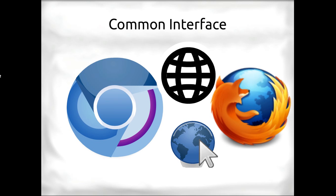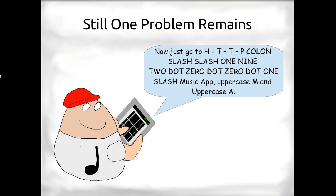Now we've got our instrument at a web page with a URL. We set up a Wi-Fi network and a web server and tell users to just navigate to the web page — something like http://192.0.0.1/musicapp. The problem with this approach is it's verbose and time-consuming. We could give them a card or print something out, but they'd still have to type it in, still make mistakes, and still have to sign up to the network.